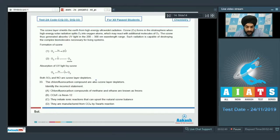Question 33: The chlorofluorocarbon compounds are also ozone layer depletors. Identify the incorrect statement. Option A: chlorofluorocarbon compounds of methane and ethane are known as Freons - this is correct. Option B: CCl2F2 is Freon 12 - this is also correct, CCl2F2 is indeed Freon 12.